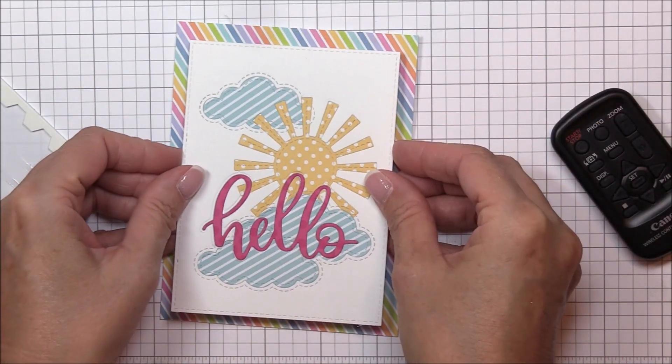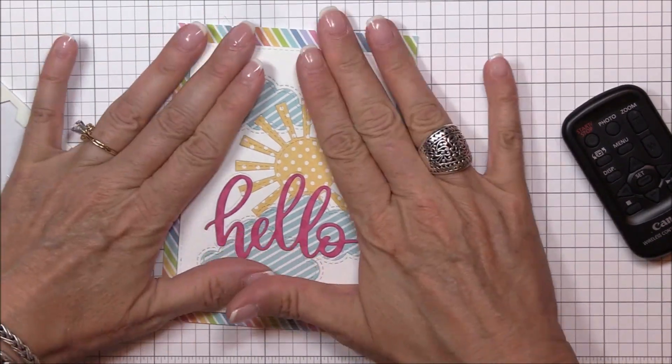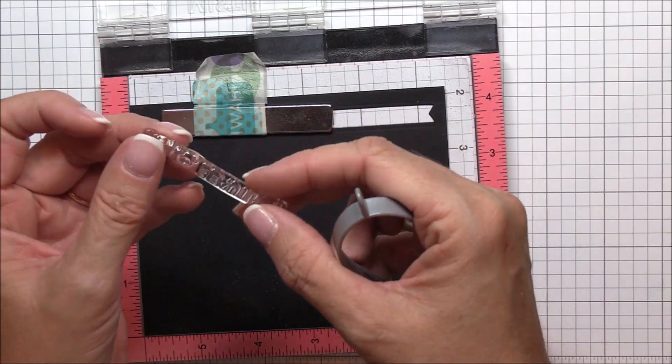Just so you won't think I'm some kind of imposter, I added some foam squares to the back of my image panel and adhered it to my card base. I guess I'm a foam square girl to the core.